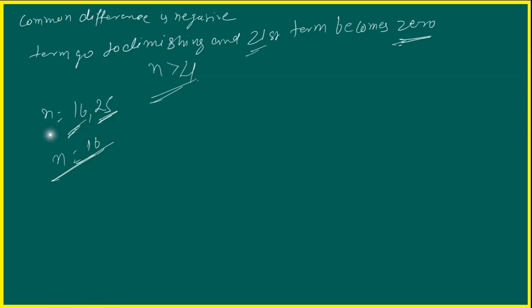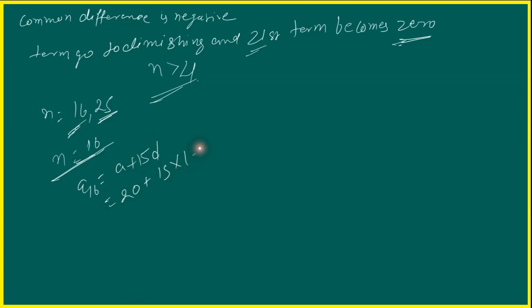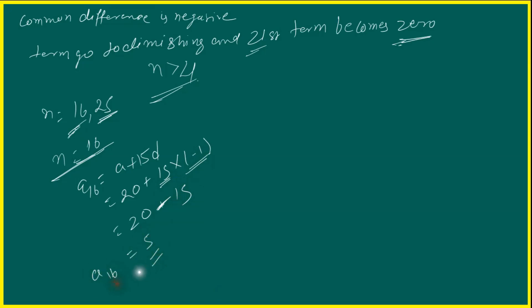N ki value 16 put karte hain. A_16 is equal to A plus 15D. A ki value 20 hai, plus 15 into D jo hai minus 1. So A_16 = 20 plus 15 times (minus 1) = 20 minus 15 = 5. The top row has 5 logs.